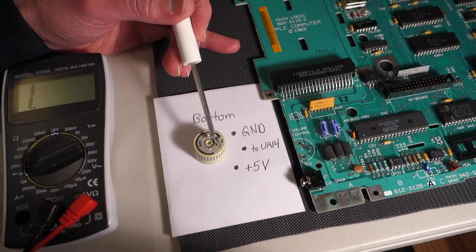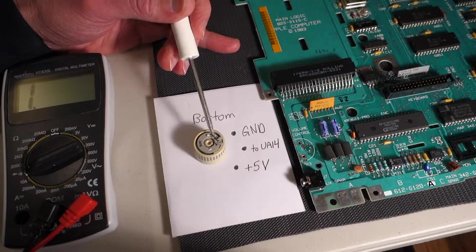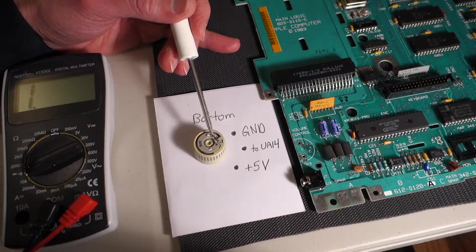And then the solder was still holding it in so I just very carefully wedged a screwdriver between the board and the volume control and just kept heating the solder until it was able to work itself free.